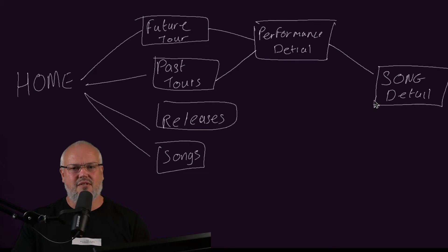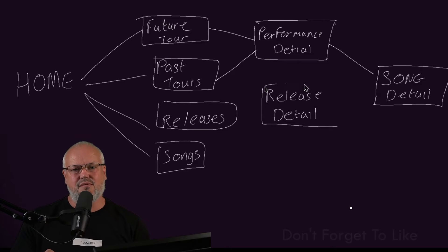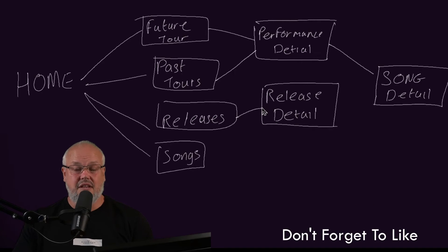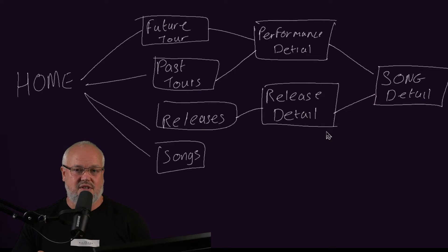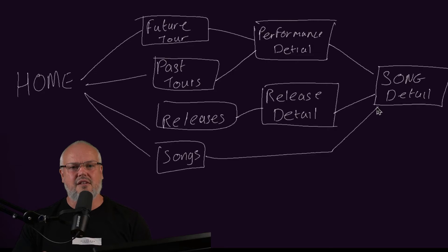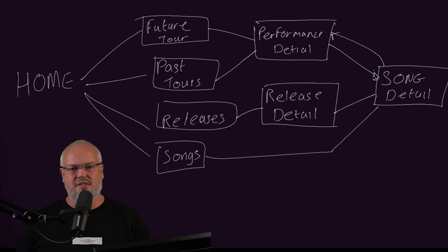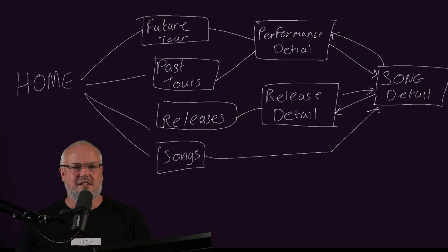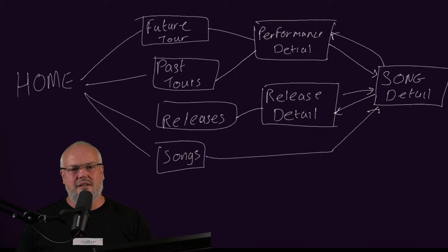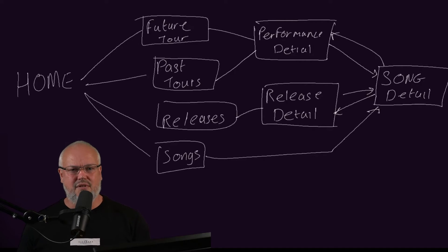If a customer is interested in a specific release, they'll go to the releases page, filter by album or single, and choose the release they're interested in. This takes them to the release details page — showing the cover, notes, and list of songs — and from that list of songs they could again click into a song's detail page. If the customer just wants to go directly to a song, they can go to songs and lyrics and see the list in alphabetical order. And the flow doesn't stop here: customers can link back to releases from the song's detail page, and also link back to specific performances from the song's detail page, as it provides lists of performances where that song has been performed.